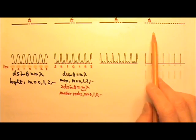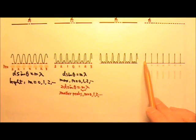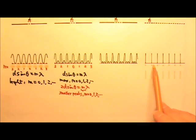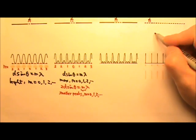If we have lots and lots of slits, we end up with very sharp M equals whole number maximum and nothing in between those maximum. This thing with lots and lots of slits is called a grating.